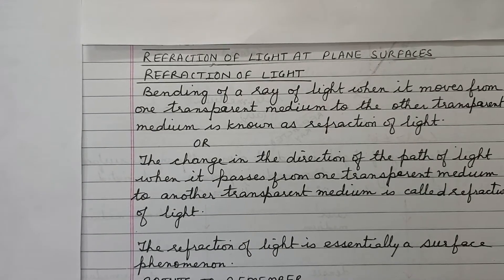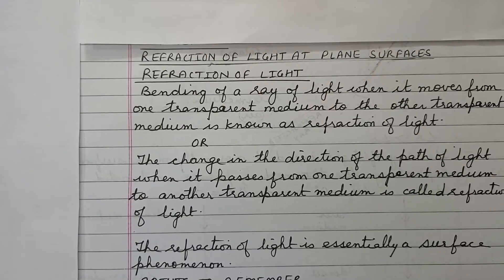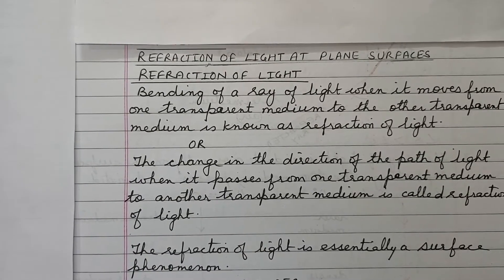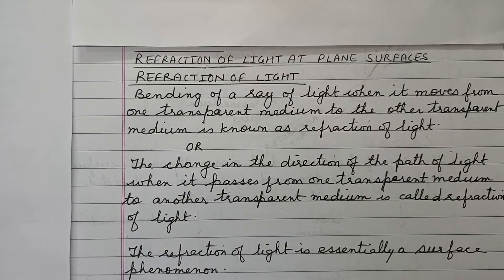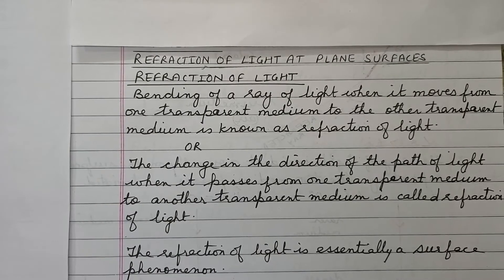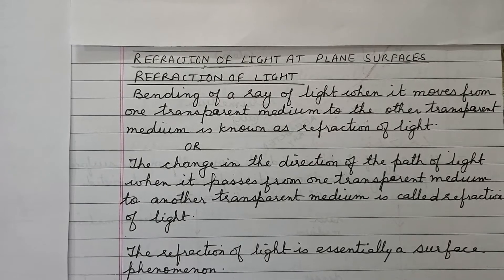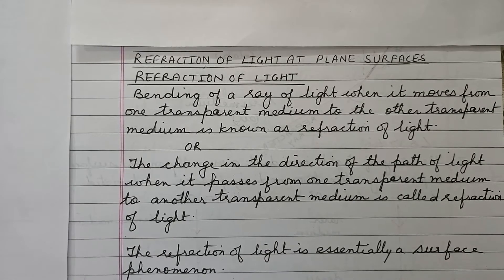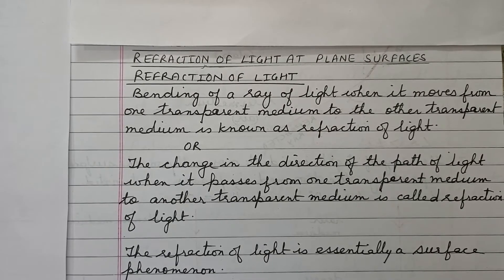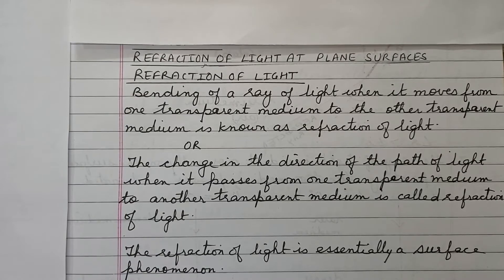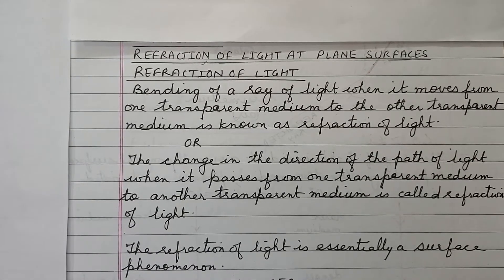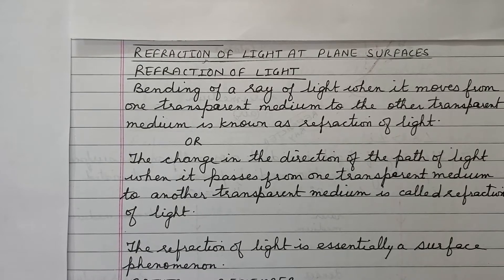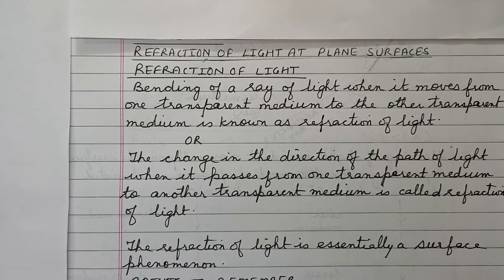Hello students, today we are going to focus on the phenomenon called refraction of light. The bending of a ray of light when it moves from one transparent medium to another transparent medium is known as refraction of light. We can also define it as: the change in direction of the path of light when it passes from one transparent medium to another is called refraction of light. In your examination you can write either definition. Please remember that refraction of light is essentially a surface phenomenon.